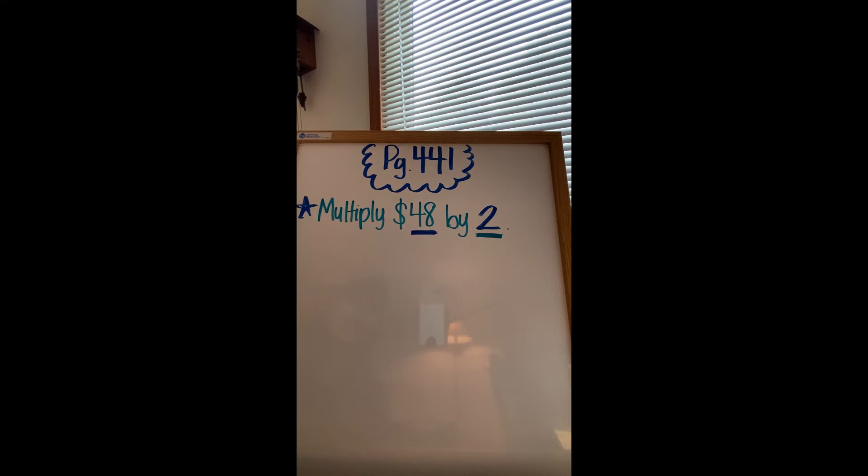The next problem that we are going to solve on page 441 is we are being asked to multiply $48 by 2. Just like how we set it up before, we're going to put our dollar sign first. We're going to do our double digit number, which is 48, which is also the larger number. Then we're going to line up our ones. So, 2 still being in the ones has to line up with that 8. 4 is in the tens column, which gives us 40. And 8 is in the ones column, which gives us 8, 40, 8.